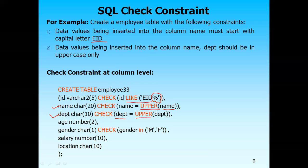One more constraint we have applied here for the gender field — gender should only be 'M' or 'F' as discussed previously. One table can have multiple check constraints as you can observe here. As per your application requirement, you can apply different business rules with the help of check constraints.